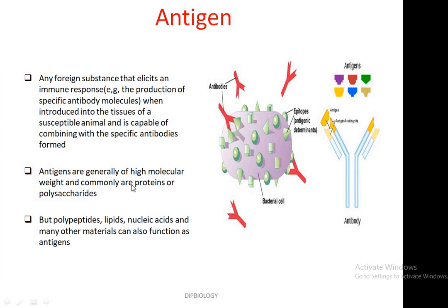Antigens are generally of high molecular weight. But sometimes low molecular weight substances like haptens, which combine with some carrier proteins, may act as or function as antigens. Antigens are commonly proteins or polysaccharides, but polypeptides, lipids, nucleic acids and many other materials can also function as antigens.